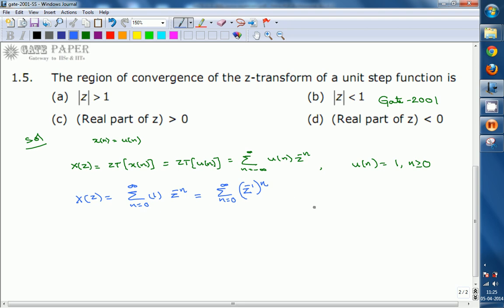This is in the form of summation N equals 0 to infinity A power N. Then we can call this infinite geometric progression. This equals 1 by 1 minus A for mod A less than 1. So we can apply this expression here.